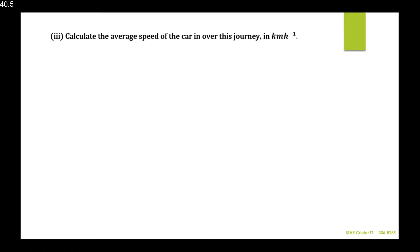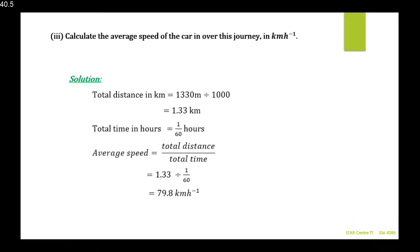Part 3: calculate the average speed of the car over this journey in kilometers per hour. Since we want the answer in km/h, distance must be in kilometers and time must be in hours. Total distance from the previous part was 1330 meters; dividing by 1000 gives 1.33 kilometers.